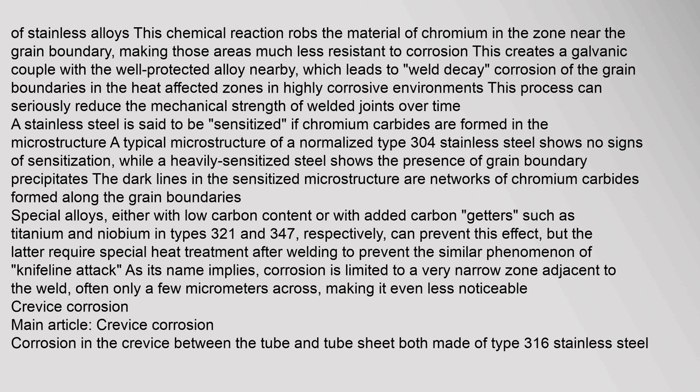In highly corrosive environments, this process can seriously reduce the mechanical strength of welded joints. A stainless steel is said to be sensitized if chromium carbides are formed in the microstructure. A typical microstructure of a normalized type 304 stainless steel shows no signs of sensitization, while a heavily sensitized steel shows the presence of grain boundary precipitates. Special alloys — either with low carbon content or with added carbon getters such as titanium and niobium in types 321 and 347 respectively — can prevent this effect, but the latter require special heat treatment after welding to prevent the similar phenomenon of knife-line attack. Knife-line attack corrosion is limited to a very narrow zone adjacent to the weld, often only a few micrometers across.